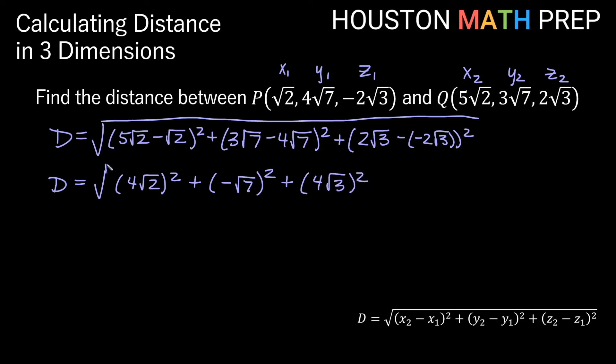That squared as well. We'll have our root over everything here. So now our distance, just be careful squaring. So if I square the outside here, 4 times 4 gives me 16, times √2 times √2 gives me the number 2. That's what a square root is. That thing times itself should give me whatever number is in here.